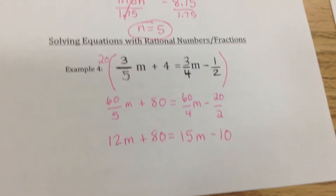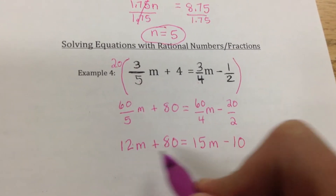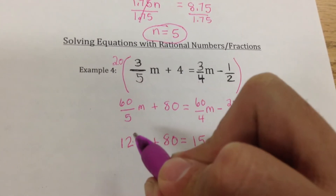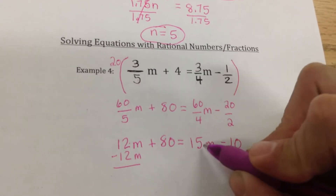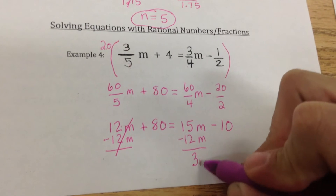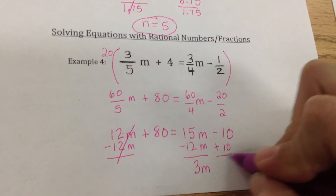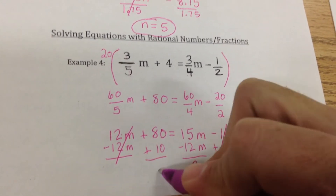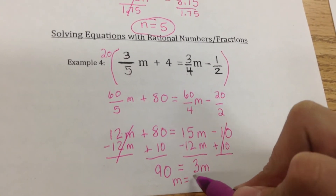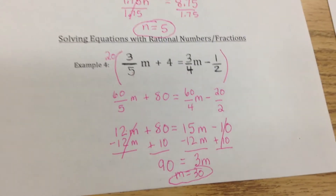Now that I've got here, I can just solve these out like we did before. I've got 12m and 15m. It's probably easier to get rid of this 12m — it's positive, so I subtract 12m from both sides. That cancels it out and gives me 3m over here. Then I want to get rid of the minus 10, so I add 10 to both sides, which gives me 90. Dividing 90 by 3 gives me a final answer of m equals 30. We'll get lots of practice with these, so don't worry the first time you see it.